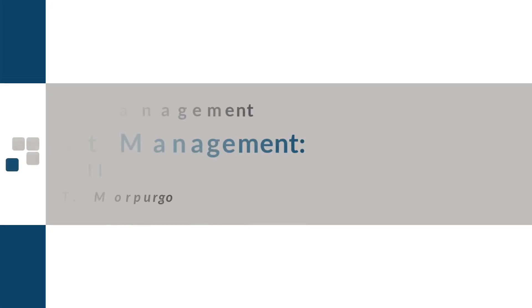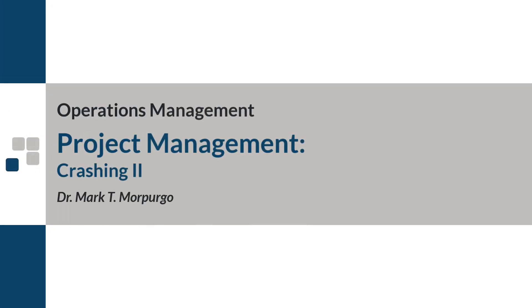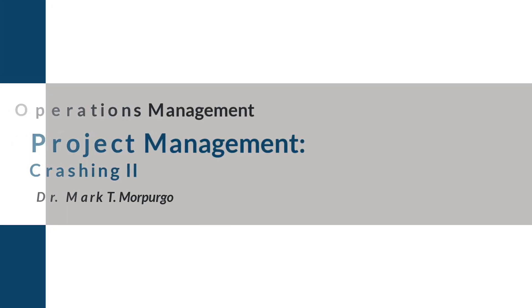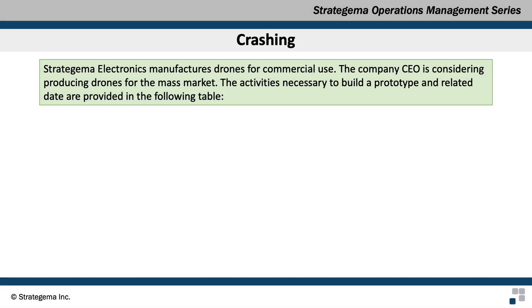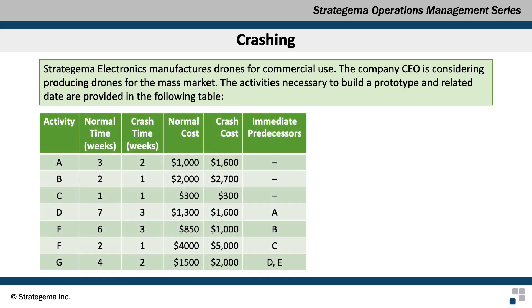This video will illustrate how to crash a project with seven activities down to its maximum crash time. Strategema Electronics manufactures drones for commercial use, and the company CEO is considering producing drones for the mass market. The activities necessary to build a prototype and related data are provided in the following table.